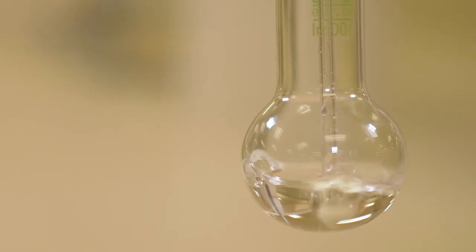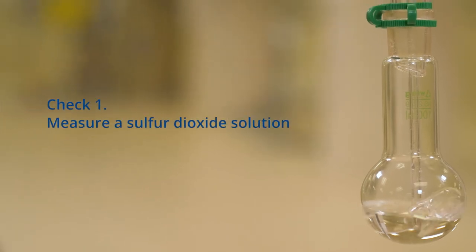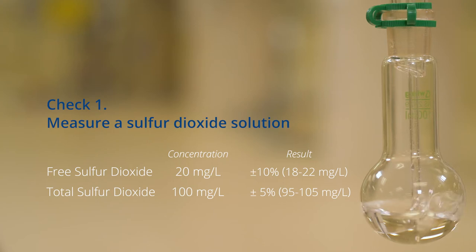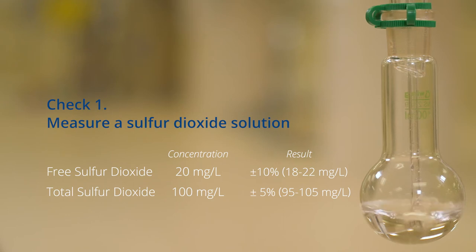It is important to regularly check the performance of the apparatus to ensure reliable results. The first check is to perform the test using a 20 mg per liter water solution of sulfur dioxide prepared from sodium metabisulfite for the free sulfur dioxide test and 100 mg per liter for the total test.